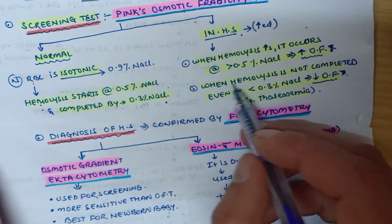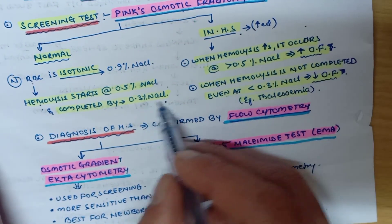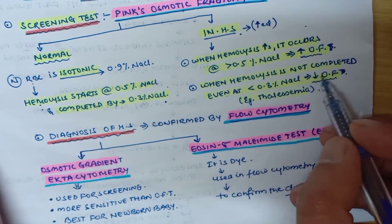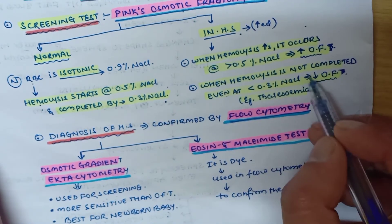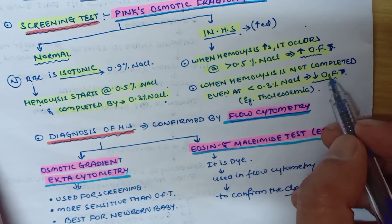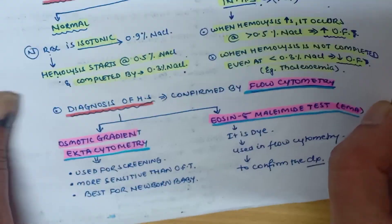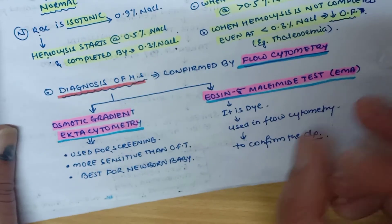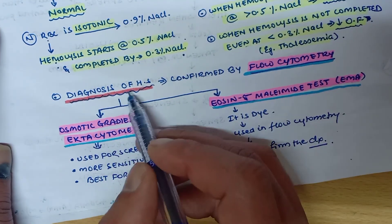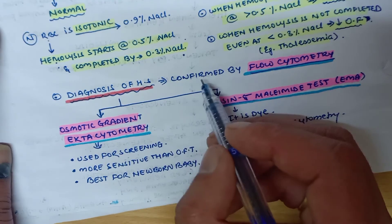When hemolysis is not completed even at 0.3% NaCl, osmotic fragility is said to be decreased. This decreased osmotic fragility is seen in thalassemia.